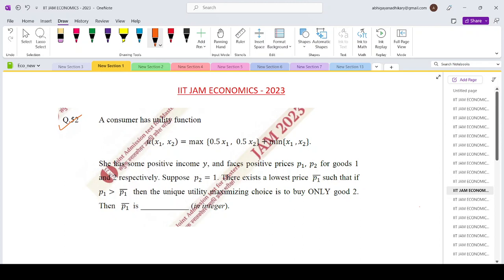A consumer has a utility function u equals max of 0.5x₁, 0.5x₂ plus min of x₁, x₂. She has some positive income y and faces positive prices p₁ and p₂ for goods 1 and 2 respectively.